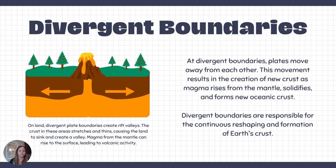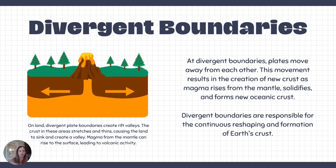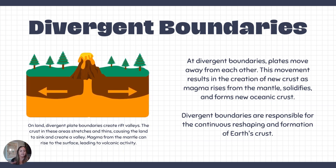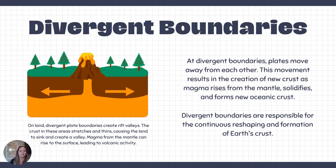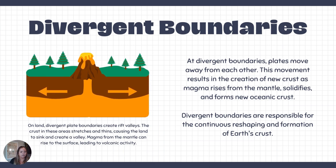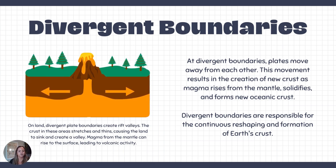Let's take a closer look at divergent plate boundaries. This animation shows two plates pulling apart, and in the middle magma oozes out from the mantle, rising to the surface and creating volcanic activity. The plates move apart and we get new crust forming in the middle — this is where we get our ridges along the ocean floor.